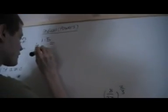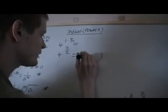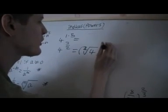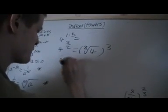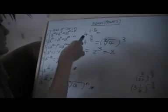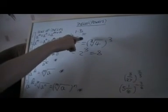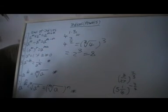4 to the 1.5. Now we know that 1.5 can be written as 4 to the 3 halves. So then we can use the last rule here: square root of 4 to the power of 3, which is 2 cubed, which is 8. What we do is we rewrite that as a fractional index or power, and then we can calculate it by using these laws here.